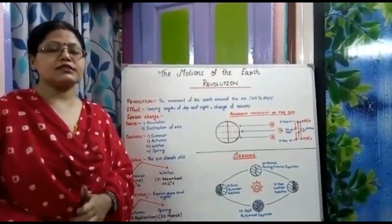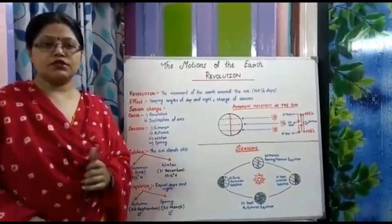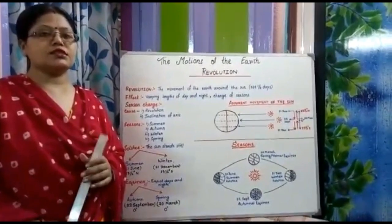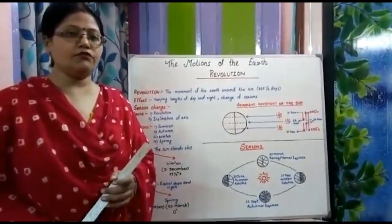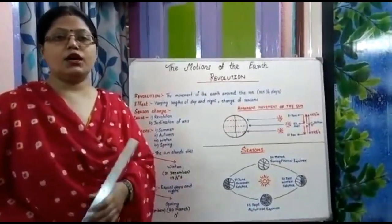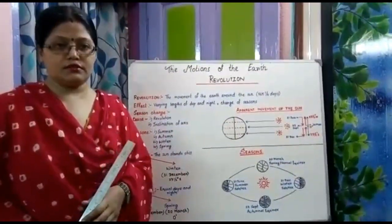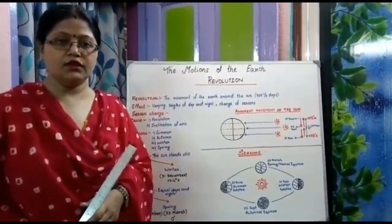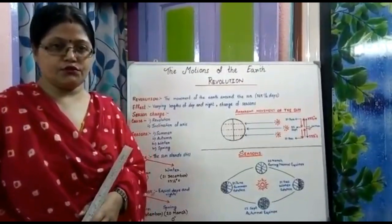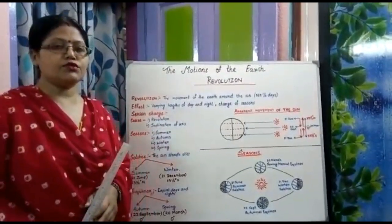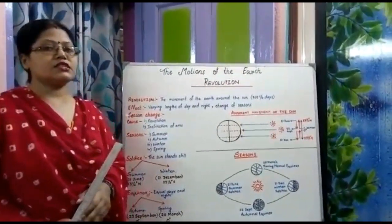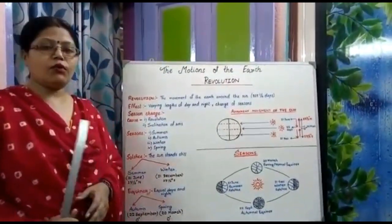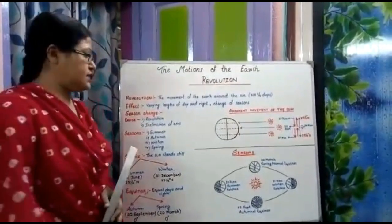So what is revolution? Revolution is the movement of the earth around the sun. This is called revolution. For one revolution, the earth takes 365 and one-fourth days.